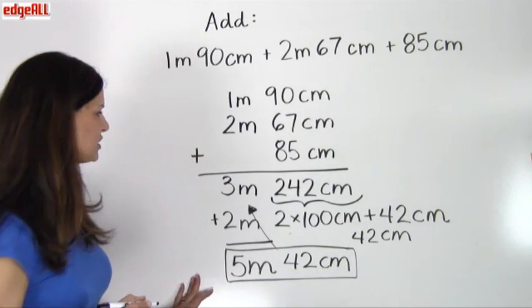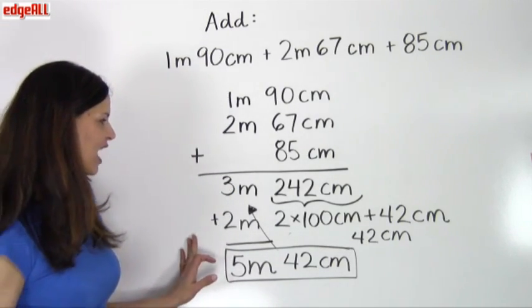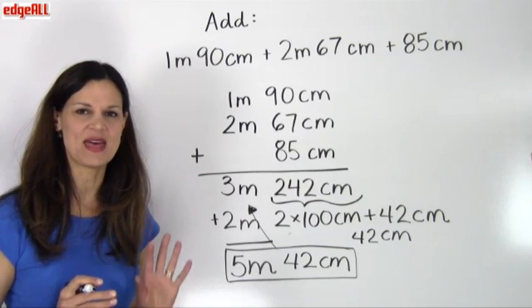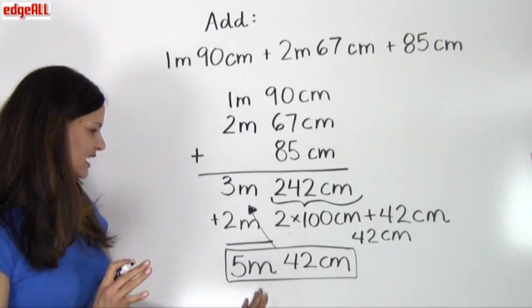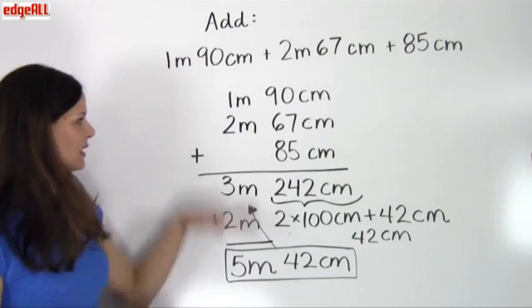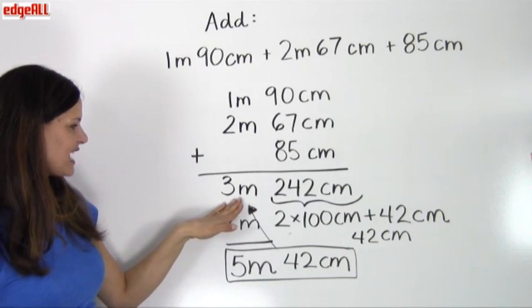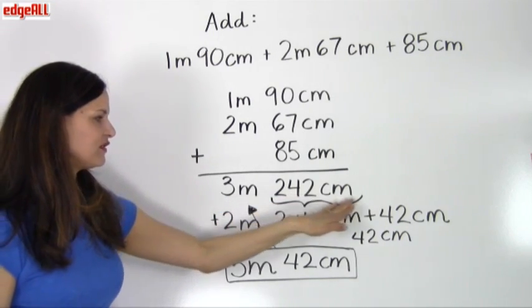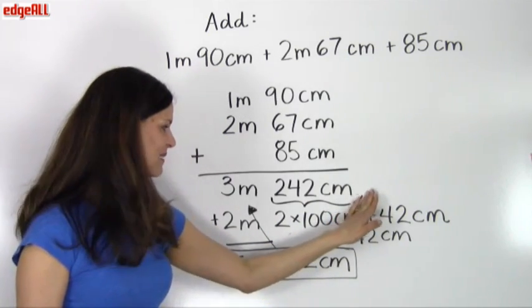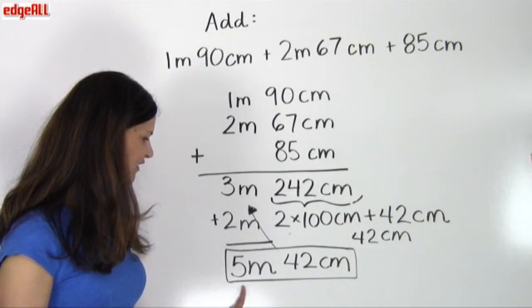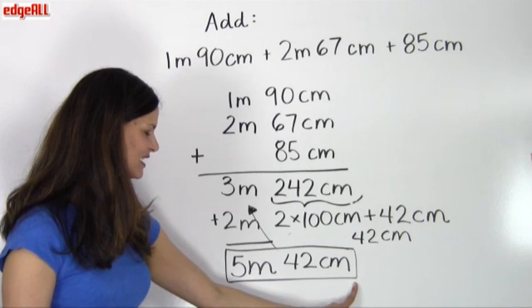So I have two different answers that are the exact same measurement, but one of them is converted to a simplified form. So when I added together my meters and centimeters, I came up with this answer of 3 meters 242 centimeters. This is the same answer as this, 5 meters 42 centimeters.